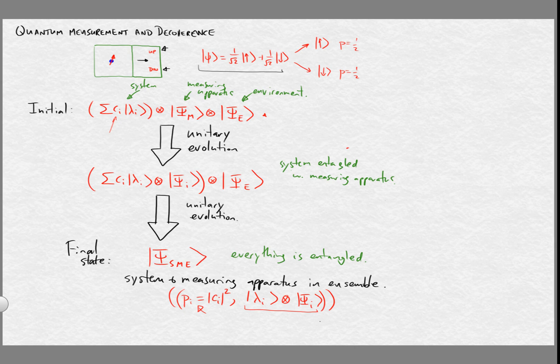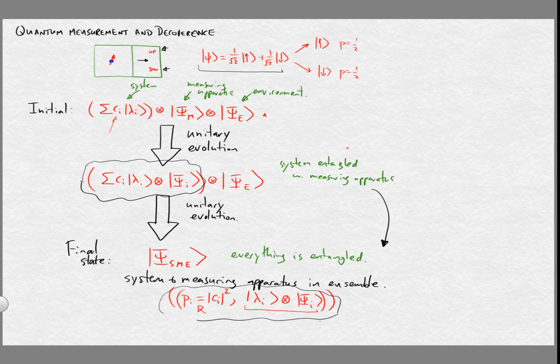This process — where we start with a superposition state for our subsystem and measuring device and end up with an ensemble as the description — is the process known as decoherence. This evolution from a quantum superposition to an ensemble, which is essentially a classical set of possibilities together with probabilities, happens through the interaction with the environment.